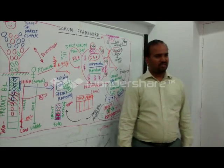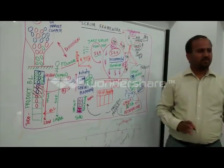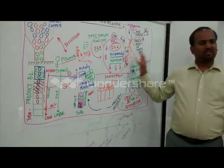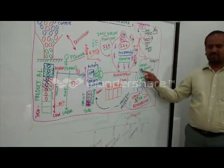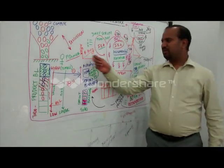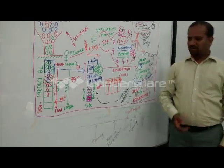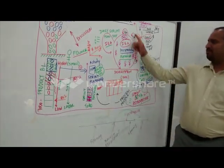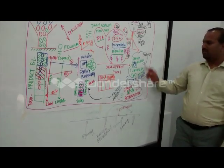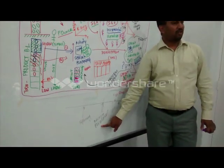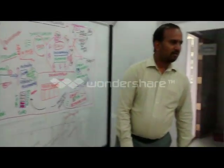To summarize the Scrum framework: there are three roles — the product owner, development team, and scrum master. Together all of these people are called the scrum team. The artifacts include the product backlog, product increment (a shippable product increment), burn up charts, and burn down charts. The activities are: sprint planning, daily scrum, sprint review, sprint retrospective — that's four — and the fifth is backlog refinement, which happens in between the sprint time.